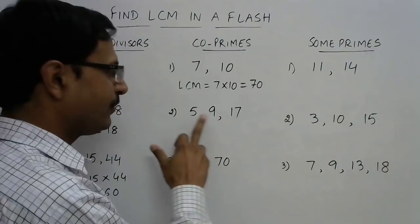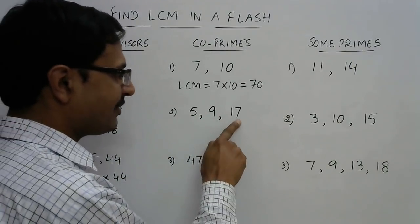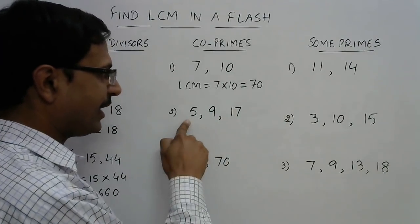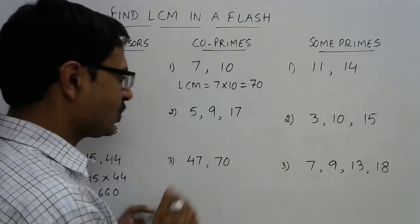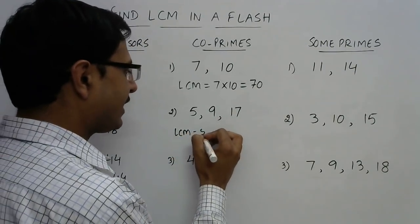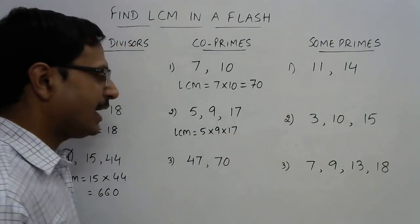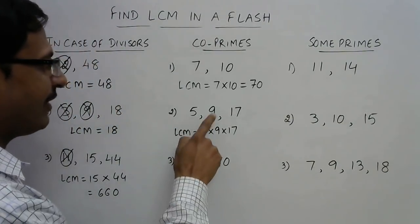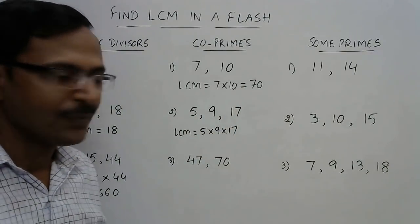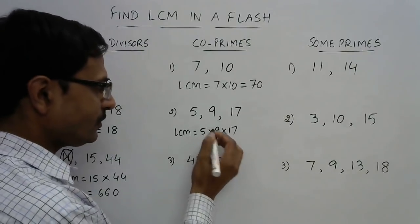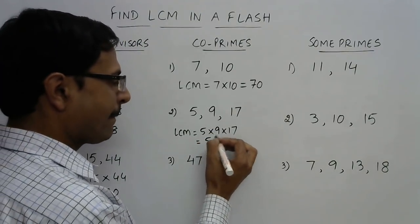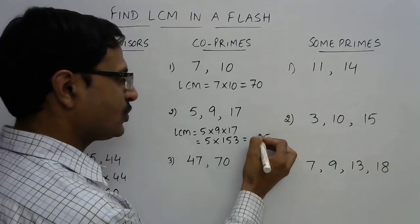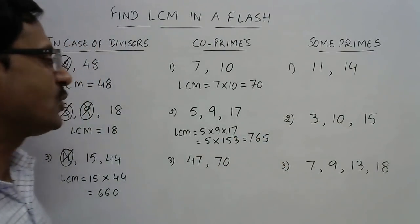Continuing with co-primes: for 5, 9, and 17 — 5 is 5 itself, 9 is 3 × 3, and 17 is a prime number. There is no common factor among all three: we have 5, then 3 and 3, then 17. So the LCM of these three numbers is directly equal to their product. There is no divisor either: 5 does not divide 9 or 17, and 9 does not divide 17. So we multiply: 17 × 9 = 153, then 153 × 5 = 765.